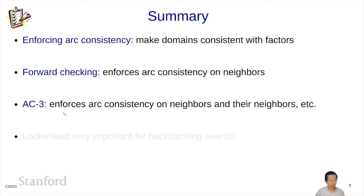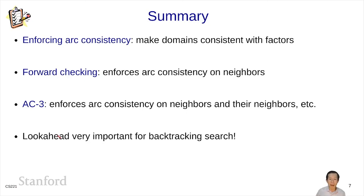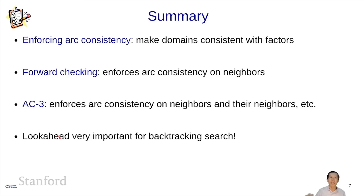Remember that AC3 and forward checking are look-ahead algorithms used in the context of backtracking search to detect inconsistencies so we can prune early, and also to maintain domains for heuristics such as MCV and LCV. Look-ahead turns out to be very important for backtracking search: if you can look ahead and detect an inconsistency, that saves you the work of actually having to recurse and explore a combinatorial number of possibilities.